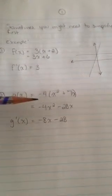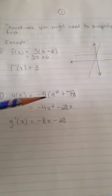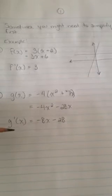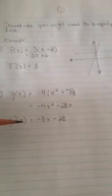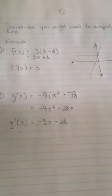In example 2 here, again, we're not sure how to take the derivative of this function g of x because we have brackets involved. So if we simplify to remove the brackets and then we take the derivative, so g prime at x would be equal to negative 8x minus 28, and that is tip number one.